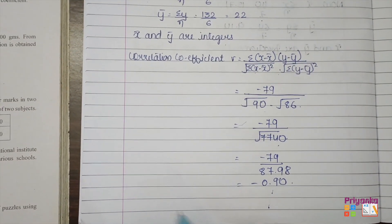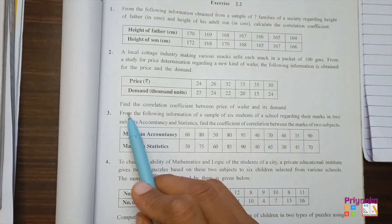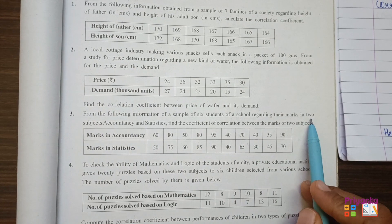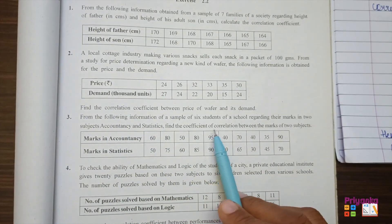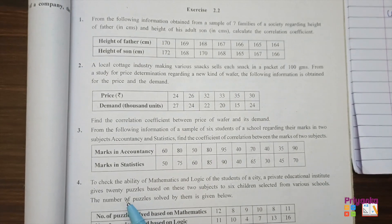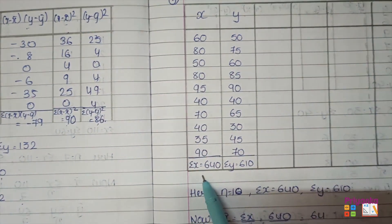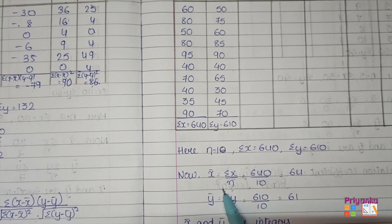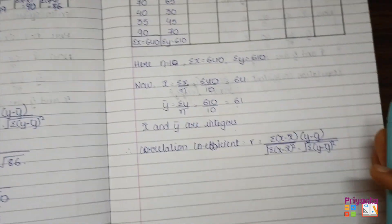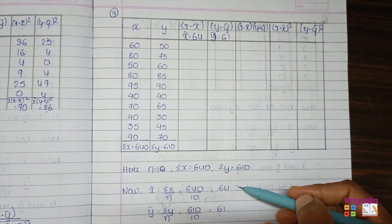Moving to Question 3: From the following information of a sample of six students regarding their marks in two subjects — accountancy and statistics — find the coefficient of correlation between the marks of the two subjects. First take the information in a table, find the totals, and determine x-bar and y-bar. Since both values come out as integers, we use the same integer formula again. Here x̄ = 64 and ȳ = 61.